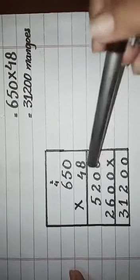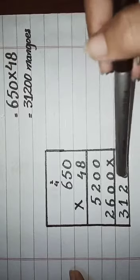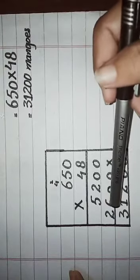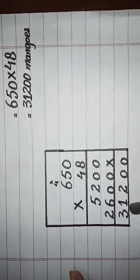After that you have to add. 0 will remain same, 0 plus 0 is 0, 2 plus 0 is 2, because when we add 0 in any term that remains same. 6 plus 5 is 11, write 1 here, carry 1. And 2 plus 1 carry is 3.